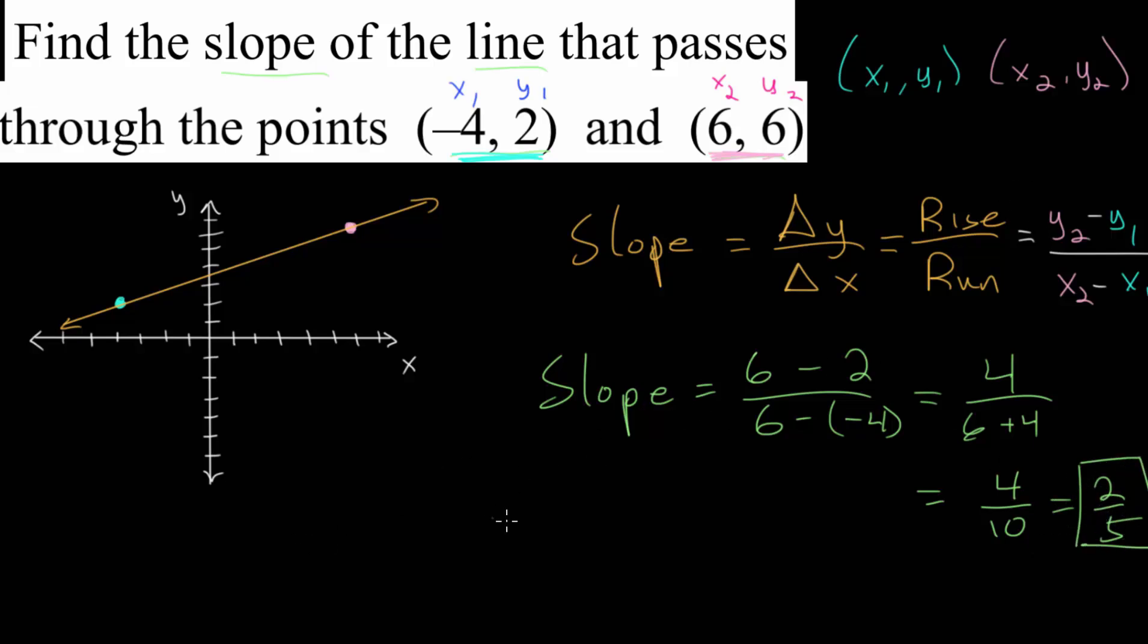And the way to interpret this, this slope here, is every time we rise two units up, we have a run of five units to the right. And we can visually see that every time we go over five, right about there, we will go up two. And we do it again, we go over five, up two, and we end up at our second point here. So the final answer for this question is simply two fifths.